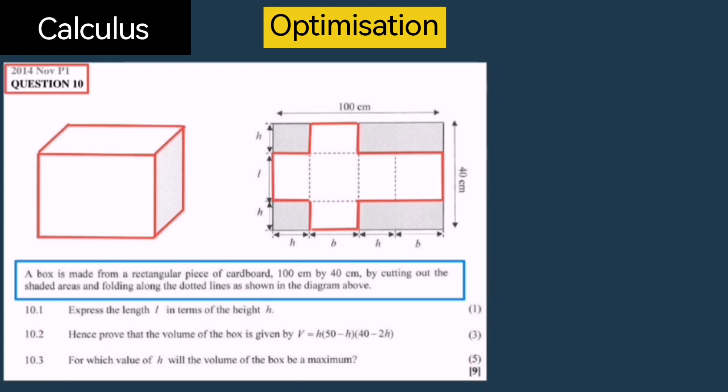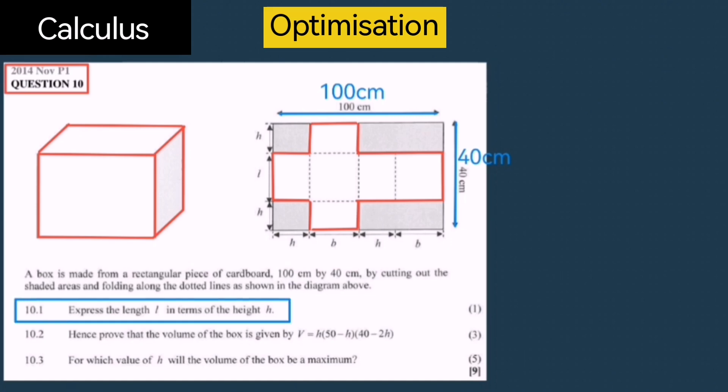Question 10 says: A box is made from a rectangular piece of cardboard, 100 cm by 40 cm, by cutting out the shaded areas and then folding along the dotted lines as shown in the diagram above. The first question says, Express the length L in terms of the height.